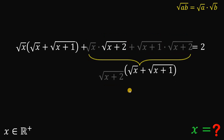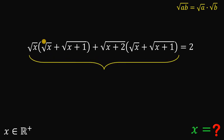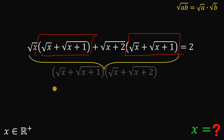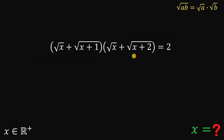Now using the whole expression, the common factor is obvious: we have square root of x plus square root of (x plus 1). So we can factor out this common factor. If we do that, we get square root of x plus square root of (x plus 1) multiplied by square root of x plus square root of (x plus 2), equals 2.